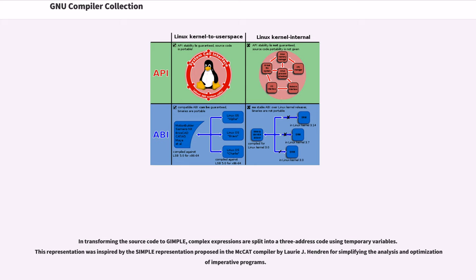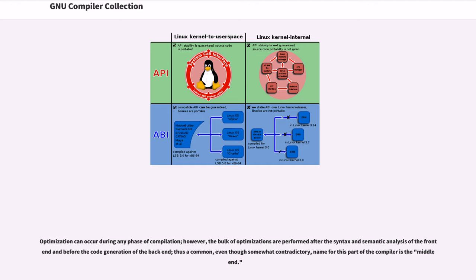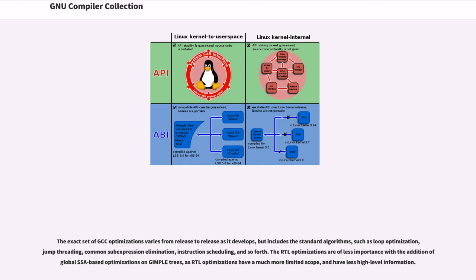In transforming the source code to GIMPL, complex expressions are split into a three-address code using temporary variables. This representation was inspired by the simple representation proposed in the MCAT compiler by Laurie J. Hendren for simplifying the analysis and optimization of imperative programs. Optimization can occur during any phase of compilation; however, the bulk of optimizations are performed after the syntax and semantic analysis of the front-end and before the code generation of the back-end — the middle-end. The exact set of GCC optimizations varies from release to release, but includes standard algorithms such as loop optimization, jump threading, common sub-expression elimination, and instruction scheduling.